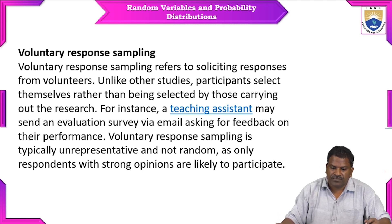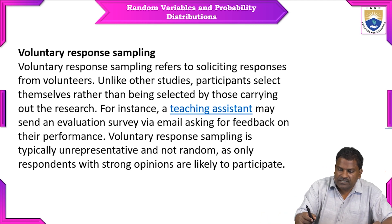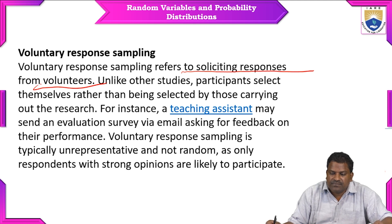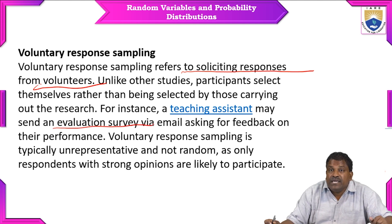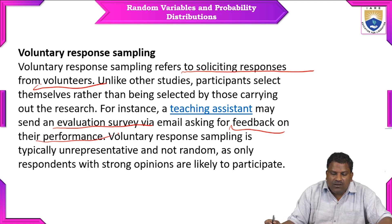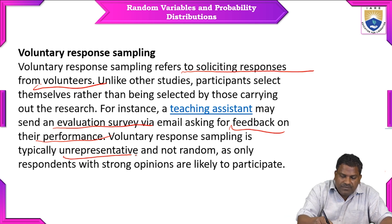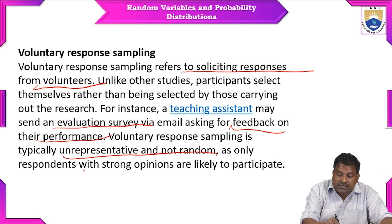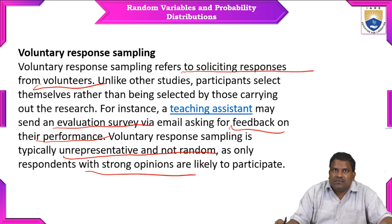One more important method is voluntary response sampling. This refers to soliciting responses from volunteers — unlike other studies, participants select themselves rather than being selected by those carrying out the research. For instance, a teaching assistant may send an evaluation survey via email asking for feedback on their performance. Voluntary response sampling is typically unrepresentative and not random, so only respondents with strong opinions are likely to participate.